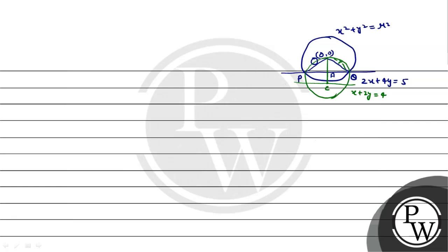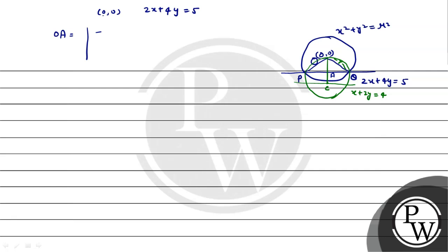Let us take point A as the foot of perpendicular from O to the chord PQ. We find OA, which is the perpendicular distance from (0, 0) to the line 2x + 4y = 5. Putting x = 0, y = 0, we get |−5| / √(2² + 4²) = 5 / √20. So OA = 5 / √20.